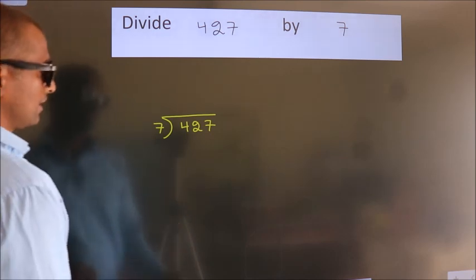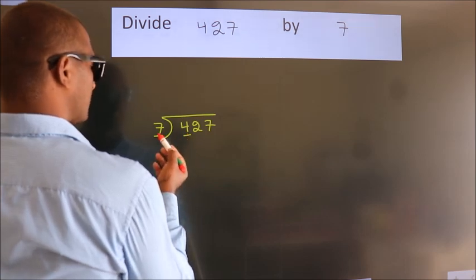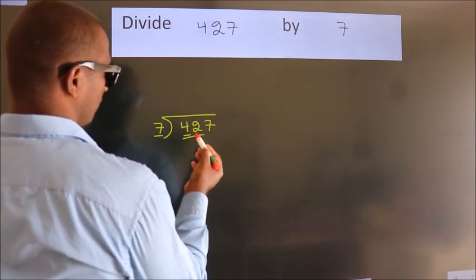Next. Here we have 4, here 7. 4 is smaller than 7. So we should take two numbers, 42.